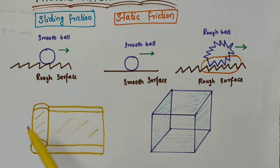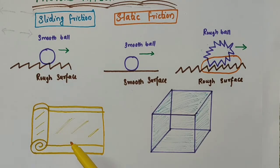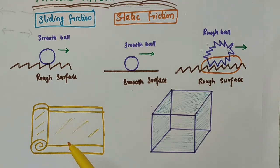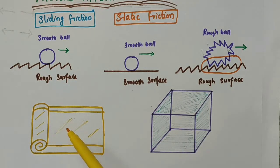Now, consider the case of a mat kept on a surface. When nobody is sitting on it, it will be quite easy for us to drag this mat. But when a person is sitting on it, it will be really difficult to drag the mat. Because friction will increase if the two surfaces are pressed harder. When someone is sitting on this mat, the surface of the mat and the surface on which the mat is kept get pressed harder, so the force of friction increases.